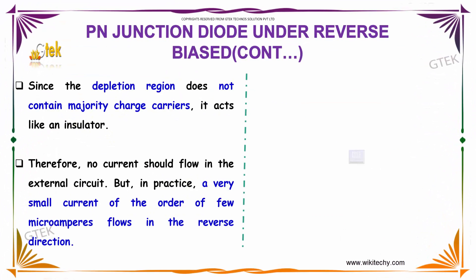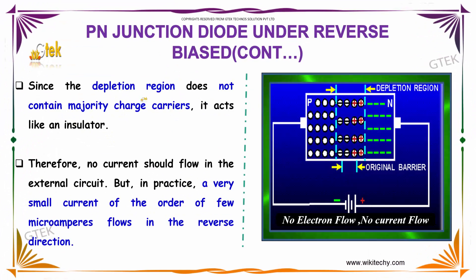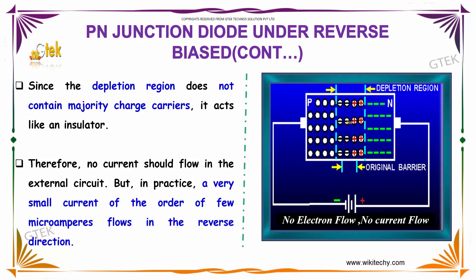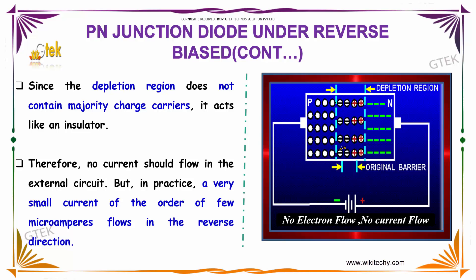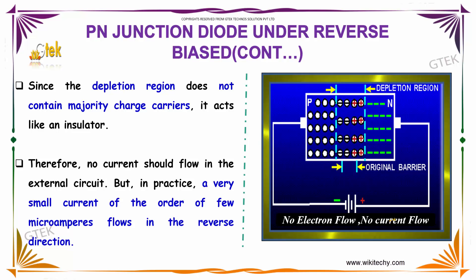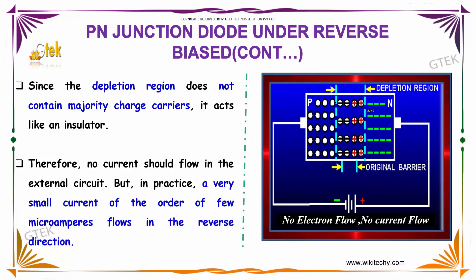Since the depletion region does not contain the majority charge carriers, it acts as an insulator. So there is no current flow.